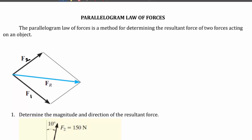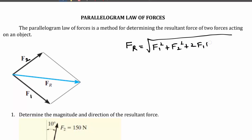The resultant force is actually the equivalent force that combines both the effects of F1 and F2. With the help of the parallelogram law of forces we can find out the resultant force. The resultant FR can be calculated as: FR = √(F1² + F2² + 2·F1·F2·cos α).